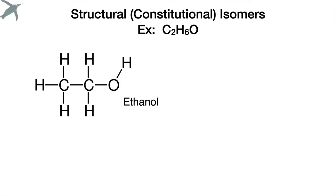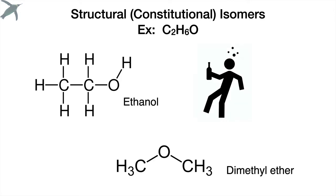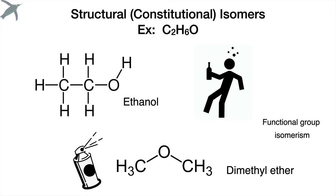Let's look at another one. Here's one some of you may know — that's ethanol. And this is dimethyl ether, which is toxic. You find it in propellants and things like hairspray and bug spray. These are also structural isomers, and we call them functional group isomers, because the functional groups that stick off of the chain are different.